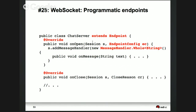There is also a programmatic endpoint approach. You can have a class extend Endpoint. The first impression may be that it's verbose, but it gives you a lot more knobs and dials to configure. You override the onOpen method — every time the chat server opens a connection, this method is called. You set up a message handler for whole string messages. To specify the endpoint address for a programmatic endpoint, you implement ServerApplicationConfig. The Java EE7 runtime scans your WAR file, picks up all ServerApplicationConfigs, and deploys those WebSocket endpoints with their URIs and configuration classes.